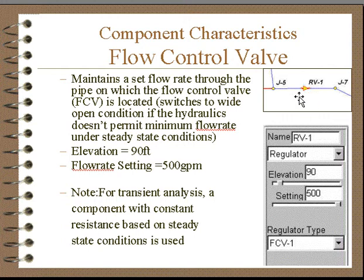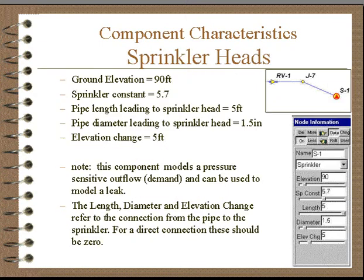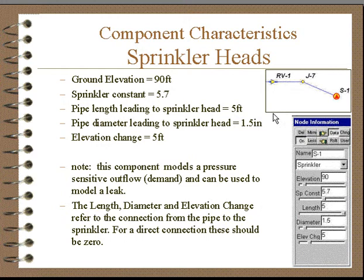A flow control valve works the same way — there will be a pressure drop, flow will be the setting, and that gives us the resistance to use in the transient analysis. Sprinkler heads are basically devices that model a pressure-sensitive outflow and these can be modeled in transients. These devices will remain at a constant resistance throughout the transient. If you want a situation where the resistance changes, this should be modeled as an active valve and not as a sprinkler.